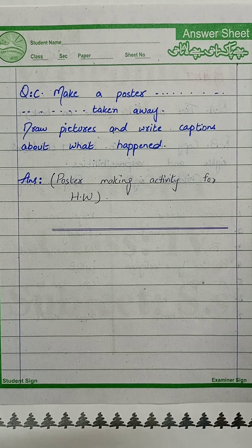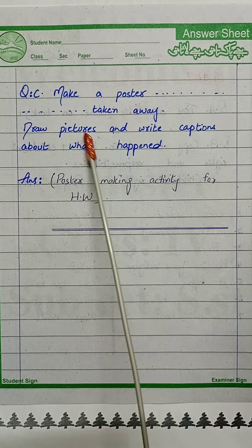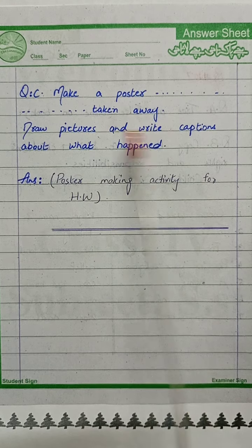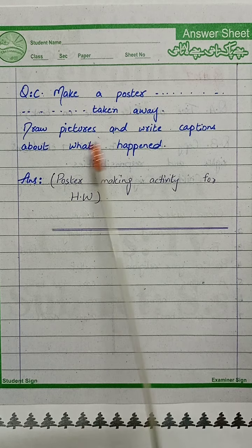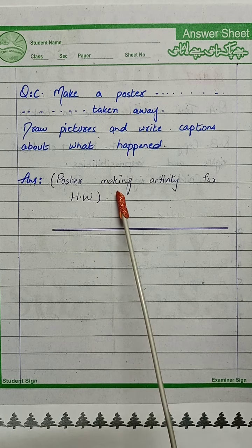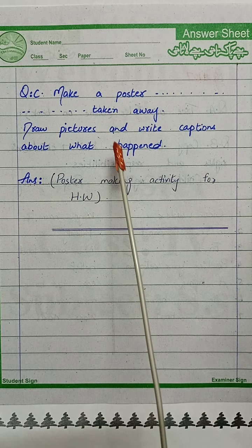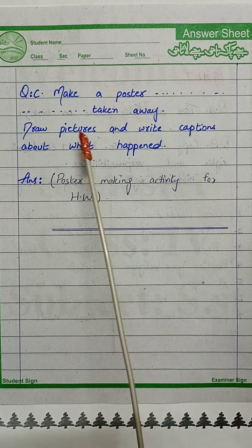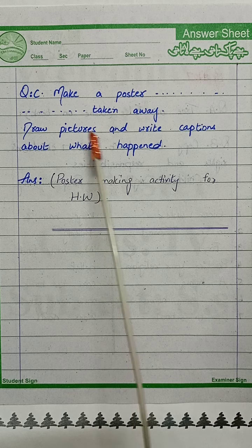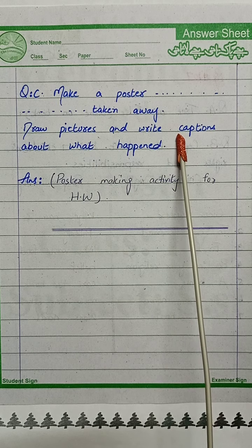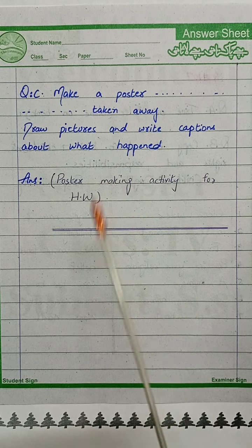Our question C is: Make a poster. Draw pictures and write captions about what happened. The poster-making activity is for homework. You have to make a poster and draw some pictures and write captions about what happened.